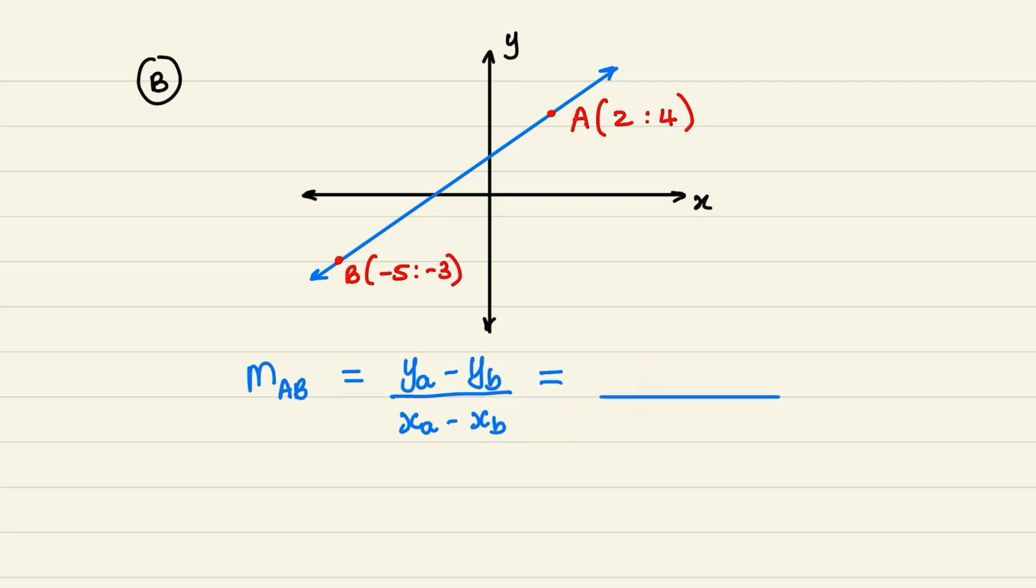So now that we have the formula, let us substitute. The y value of coordinate a is 4. And I subtract the y value of coordinate b, which is negative 3. And notice that I'm subtracting negative 3.